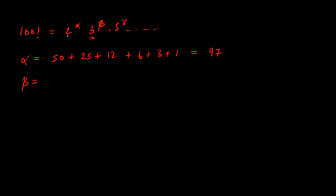Similarly, we calculate beta — the maximum power of 3 divisible by 100 factorial. Divide 100 by 3: floor of 33.something is 33. Divide by 3 again: 11. Divide by 3: floor of 3.something is 3. Divide by 3: 1. Divide again and the floor of a fraction is 0. Adding up: 33 + 11 + 3 + 1 = 48, so beta equals 48.